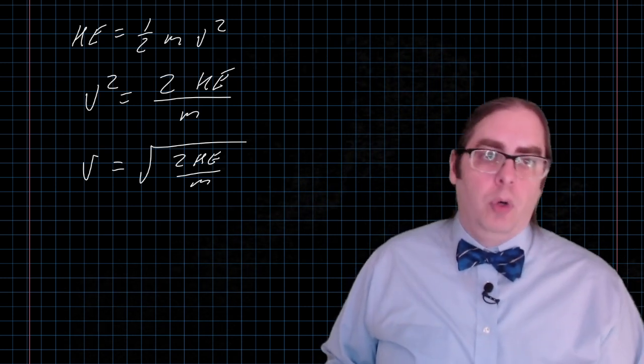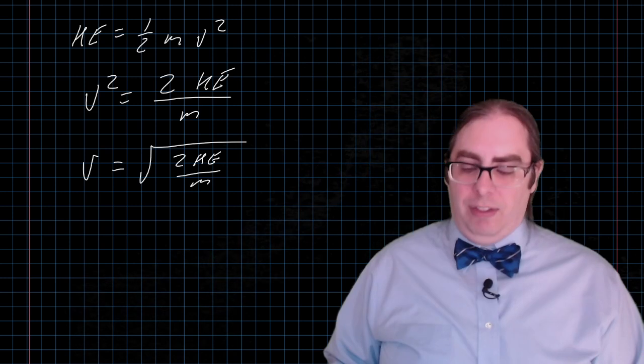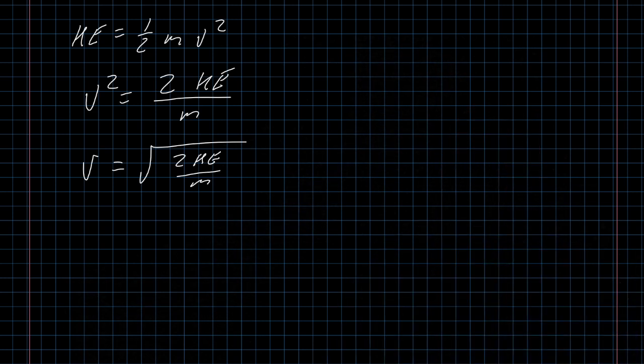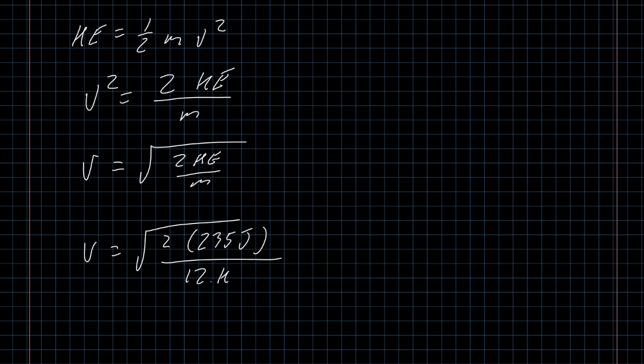But anyway, we have this formula for the velocity of an object, given its kinetic energy and given its mass. So if we plug in a couple of relevant values, for example, we might have an object that has a kinetic energy of 235 joules, and a mass of 12 kilograms. I can punch in the numbers into my calculator. 2 times 235 divided by 12. And that comes out as this ugly decimal number, 39.2. I'll give it three significant figures.